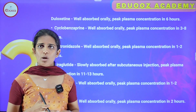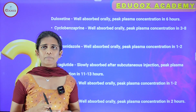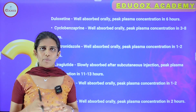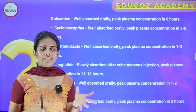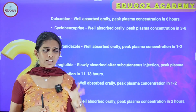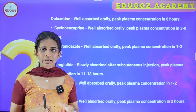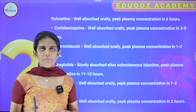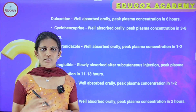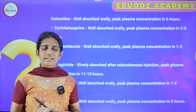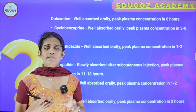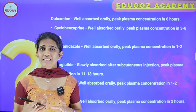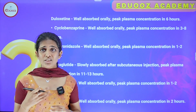Metronidazole is well absorbed orally with peak plasma concentration in 1 to 2 hours. Liraglutide is a glucagon-like peptide receptor agonist used for diabetes. It is slowly absorbed after subcutaneous injection with peak plasma concentration in 11 to 13 hours.